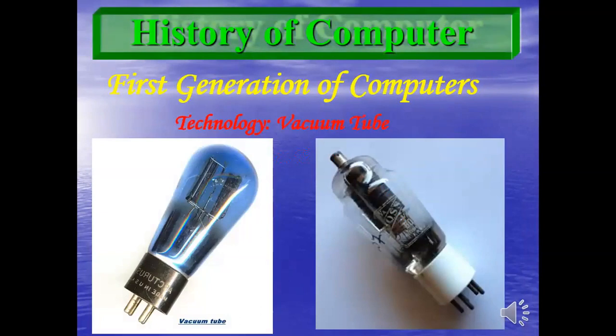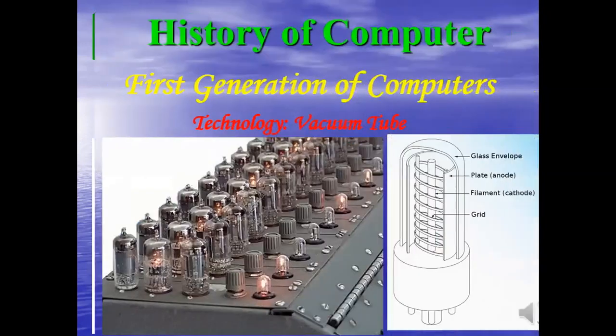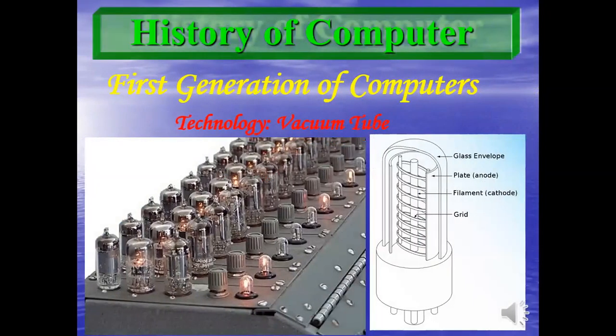Vacuum tubes look like long light bulbs, as you can see on your screen. They were used in electronic devices in the 1940s and 1950s. There are different types of vacuum tubes with different shapes, as shown in the pictures.